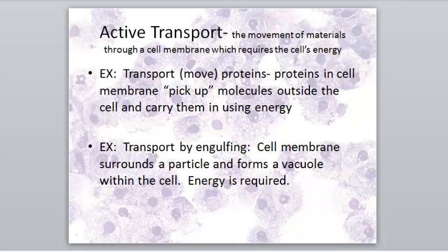Some examples of active transport include when a cell has to transport food from outside the cell and move it in. Another example is transport by engulfing — sometimes a cell has to engulf or surround a material, like when a white blood cell has to consume something dangerous like bacteria. The white blood cell surrounds the bacteria and creates a vacuole to digest it. This movement requires energy, so it's called active transport.